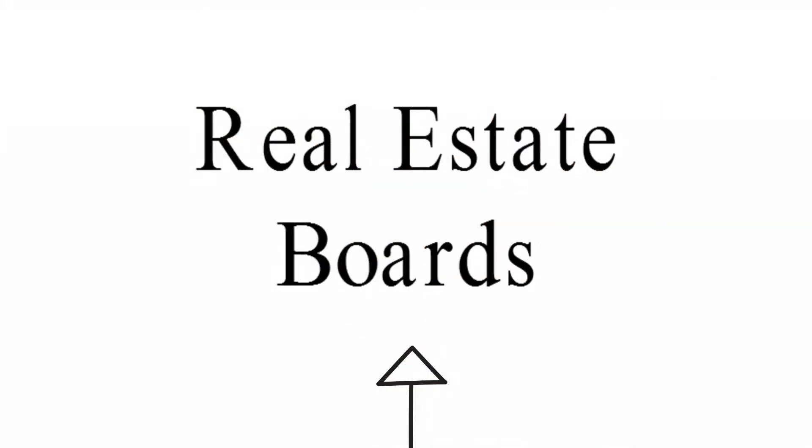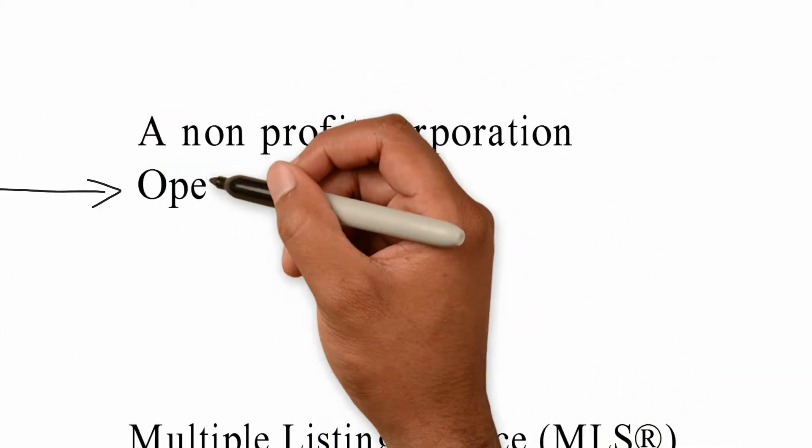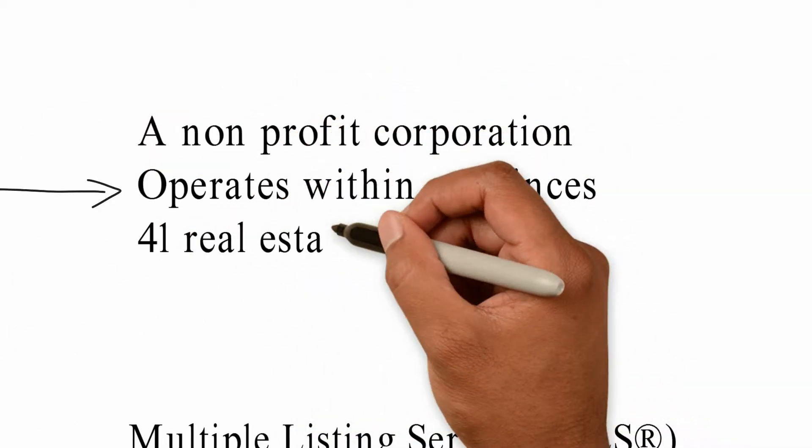TREB is part of real estate boards. Real estate boards are non-profit corporations. They operate within provinces. There are 41 real estate boards in Ontario, TREB being the largest.